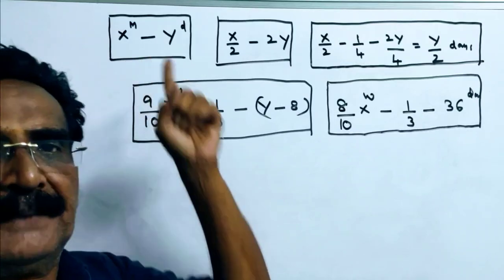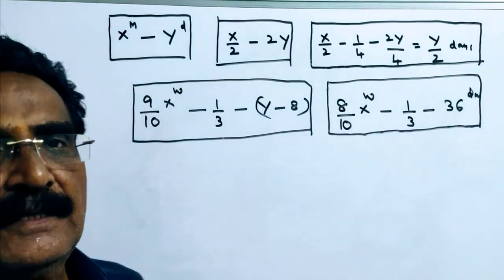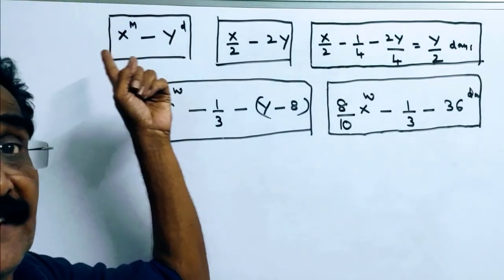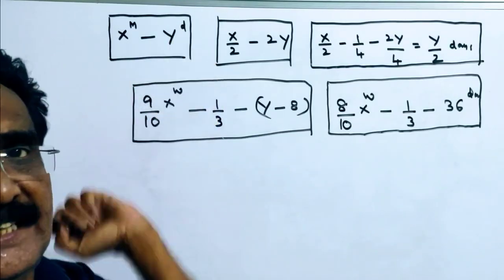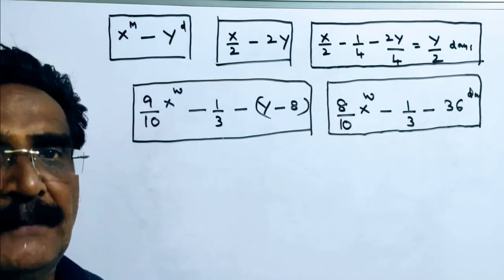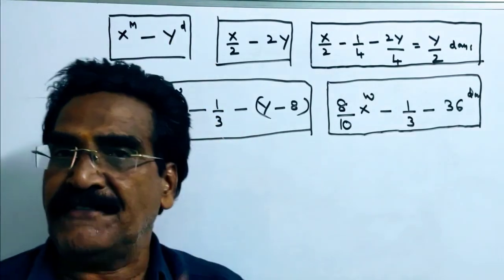See friends, X men can complete a work in Y days. If X men can complete a work in Y days, then X by 2 men, that is 0.5 X men.